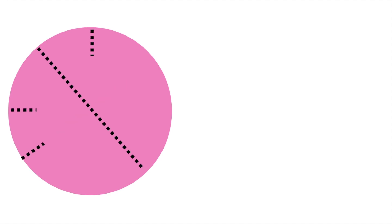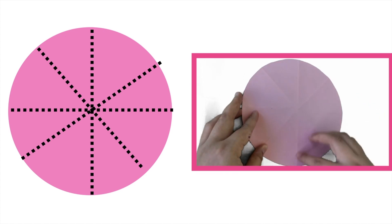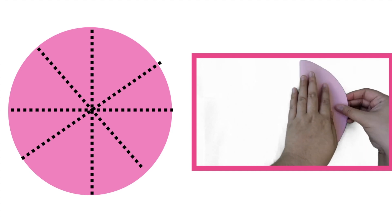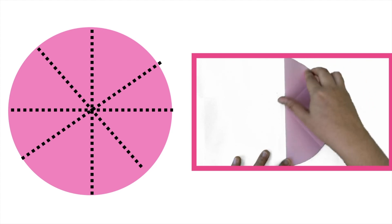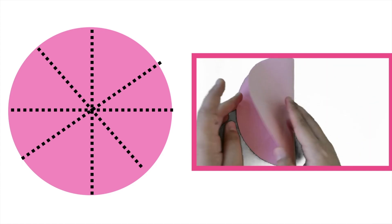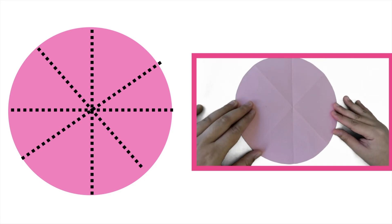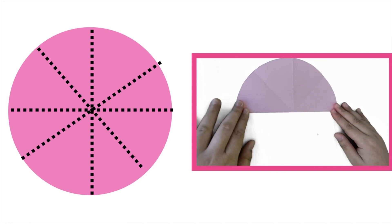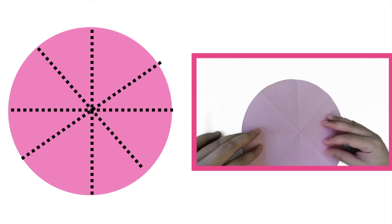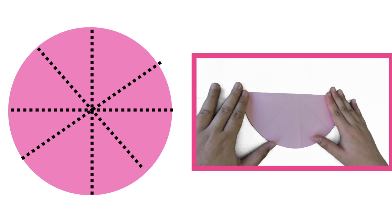Always remember, children, some figures can be divided into equal parts, while some figures can have two or more lines of symmetry, just like this circle. So, we can have the line of symmetry here, we can have it here, we can also have it here, here, and many more. Let's watch this video to find out. So, we can fold the circle just like this and we can have equal parts, right? We can also fold the circle just like this and we can have two equal parts. Always remember, children, some figures will have two or more lines of symmetry, and some figures cannot be divided into equal parts.